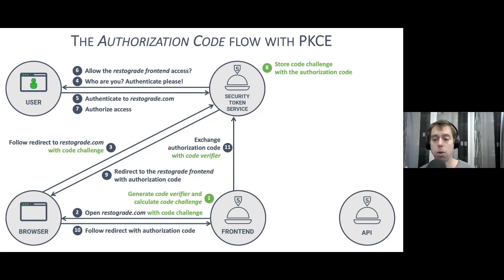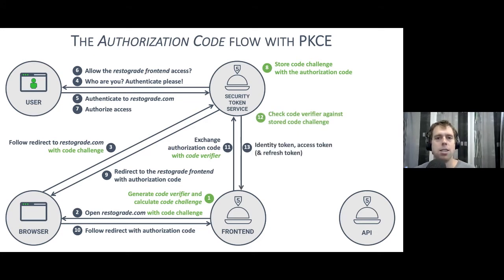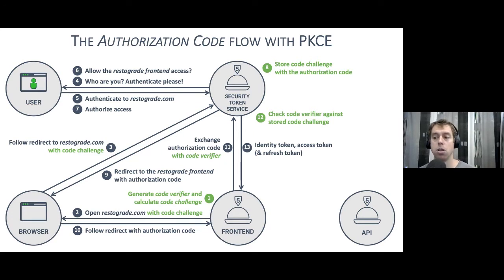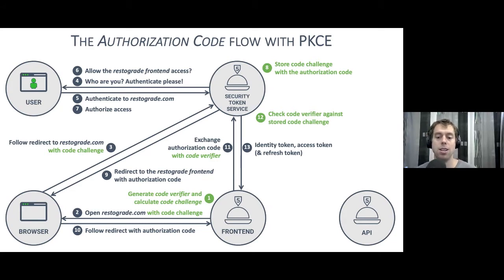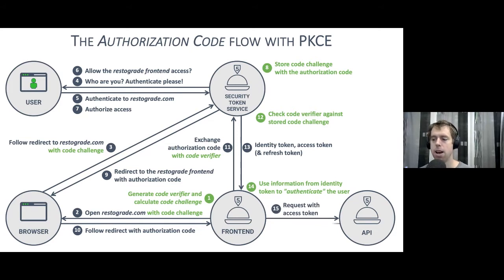The front end makes a JavaScript-based API call to a token endpoint at the STS to exchange that code for tokens. In step 11, the client provides the code verifier — the one-time password secret — to the STS. The client is basically saying: 'I said I knew a secret; here it is.' The STS recalculates the hash of the secret and compares it to the one stored earlier. If they match, the STS knows it's the same client — running in the same browser where the secret was stored — and not an attacker who stole the code.